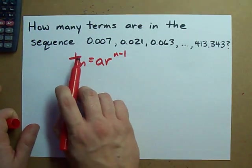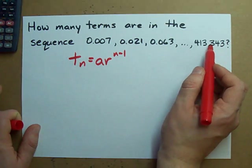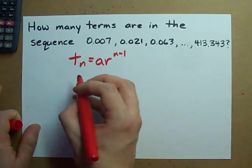Here, though, we're given the value of the term. We don't know what n is for this. So, we plug that in,